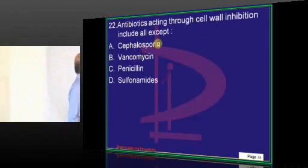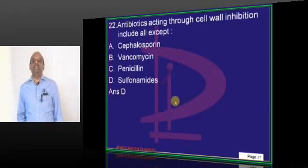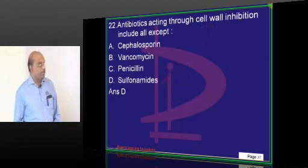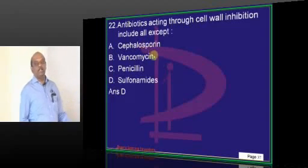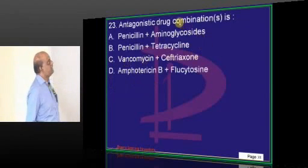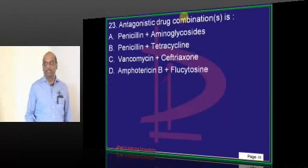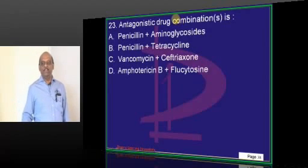Cell wall inhibition is not a feature of sulfonamides, whereas penicillin, vancomycin, and cephalosporins are all cell wall synthesis inhibitors.